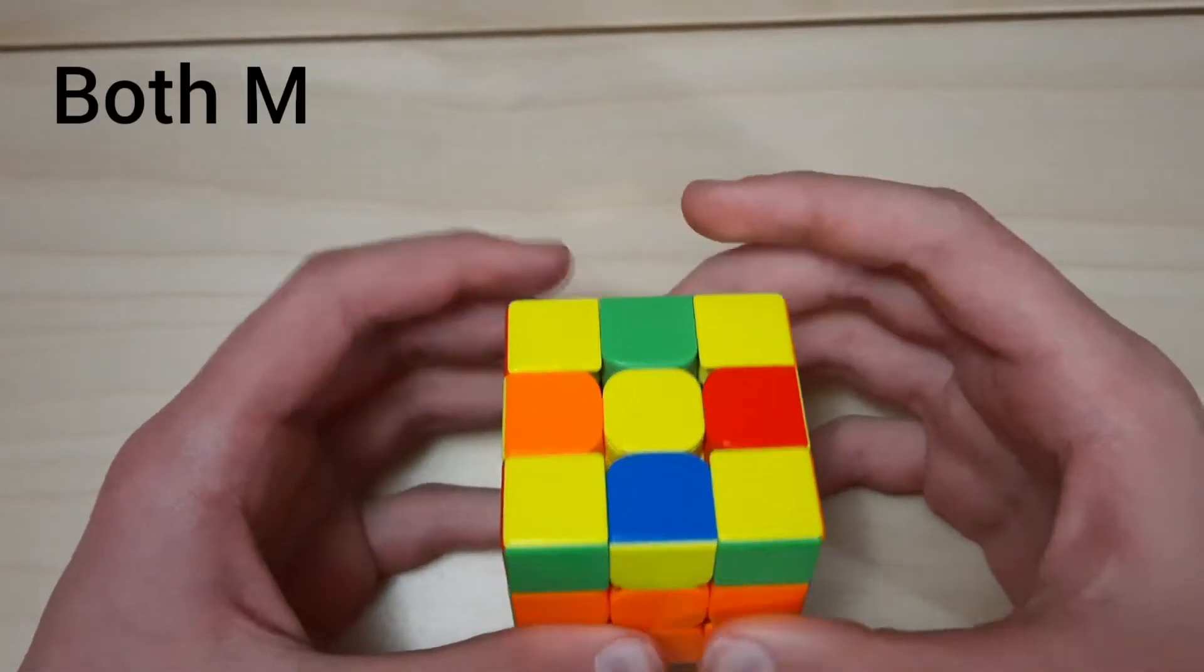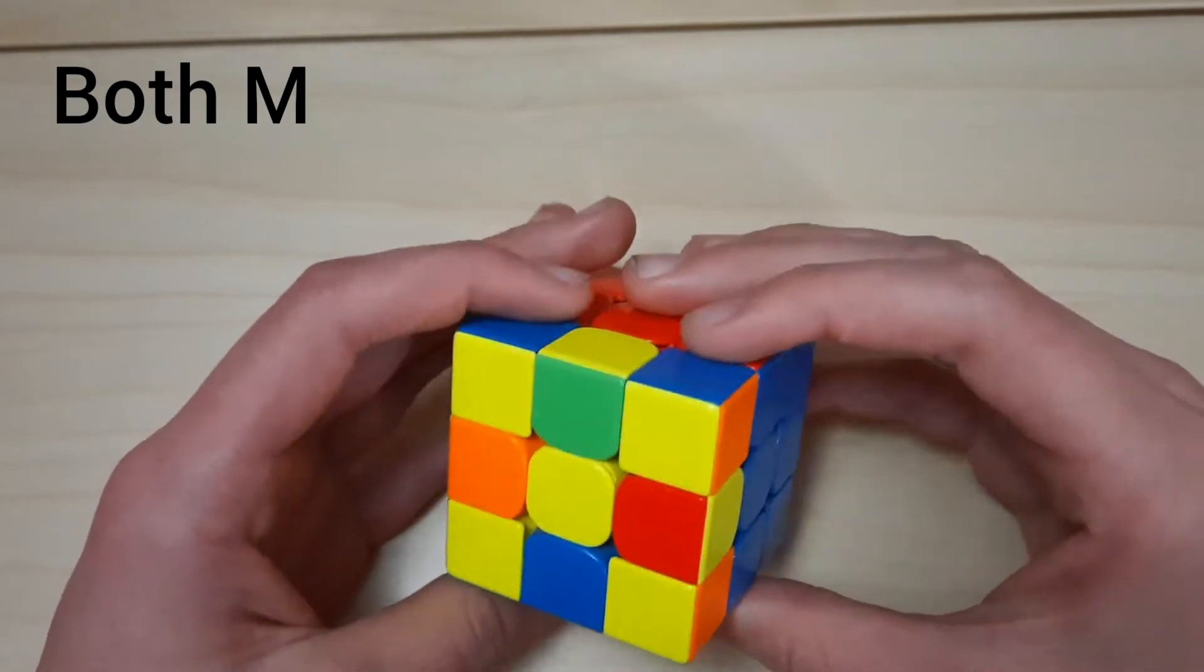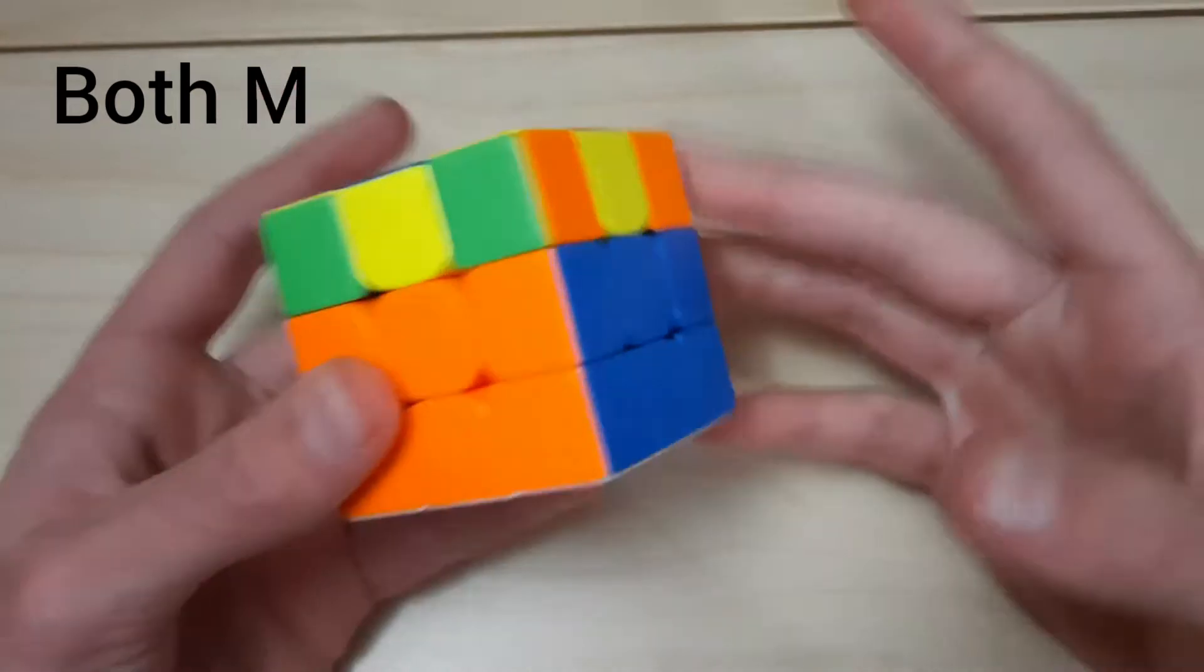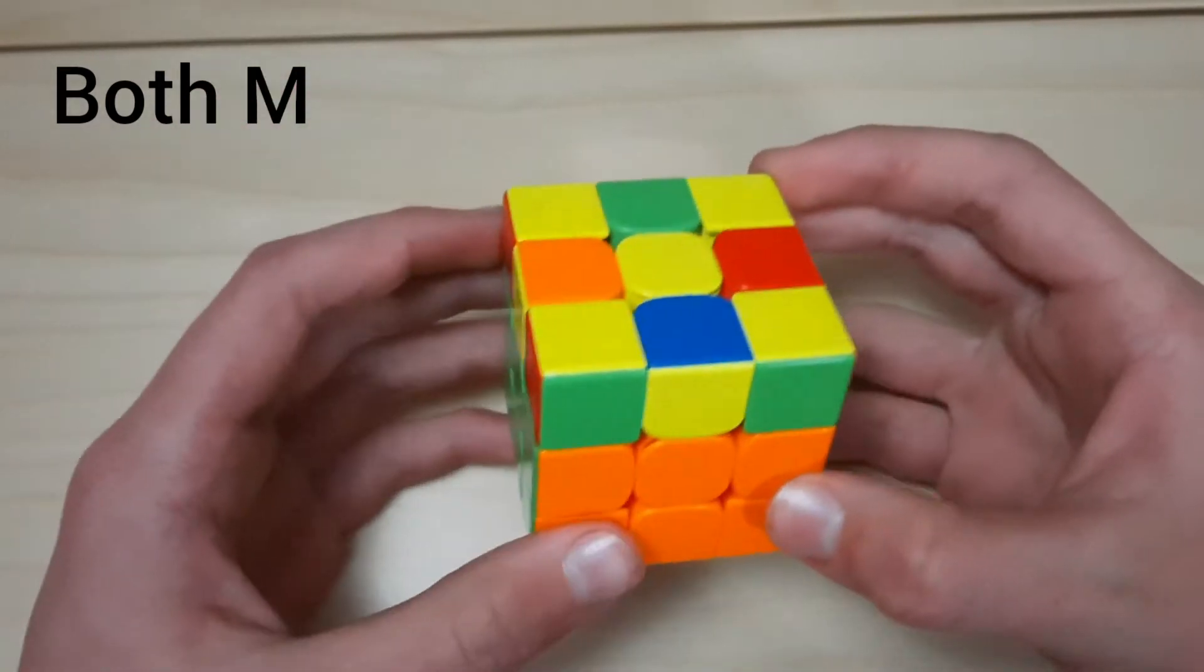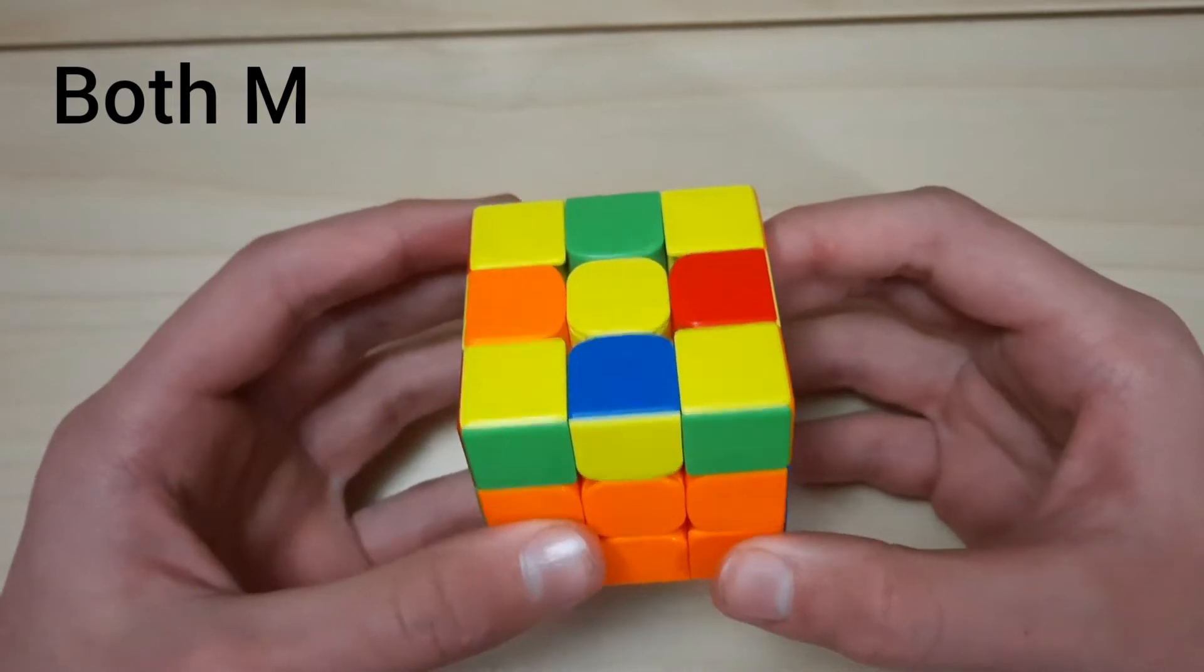The first set of cases is where we have both of the left and right edges misoriented. This first one is where they're opposite. The next one's going to be where they're adjacent, and that'll be it since this case has a lot of symmetry. A lot of the cases are just mirrors or something along those lines.